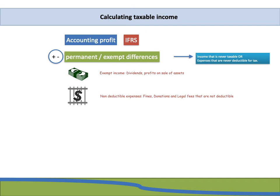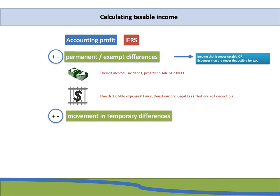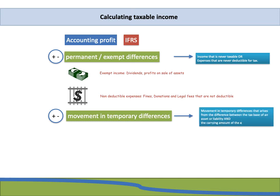Those are your permanent or exempt differences. The next step is to add or subtract the movement in temporary differences. The movement in temporary differences arises from the difference between the tax base of an asset or liability and the carrying amount of that asset or liability. We are going to deal with this in more detail later, so don't worry if this sounds new — we just want to cover the basic idea for now.